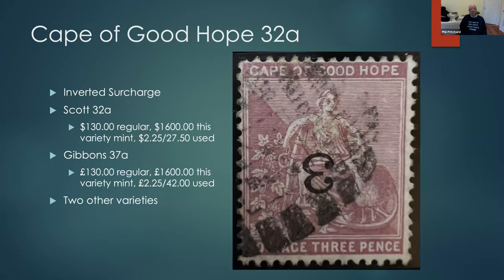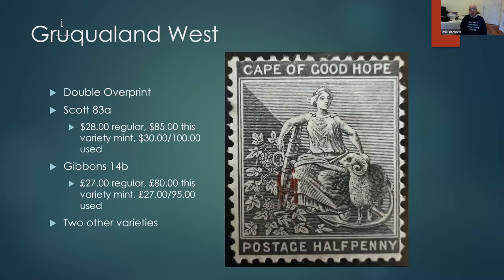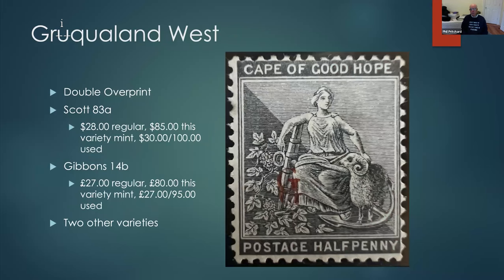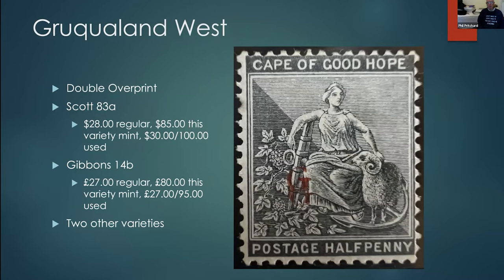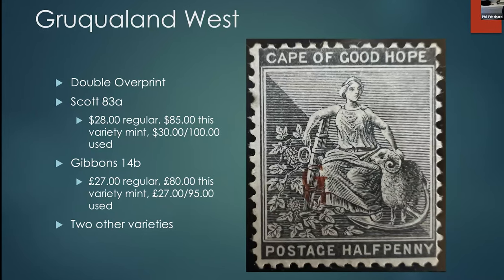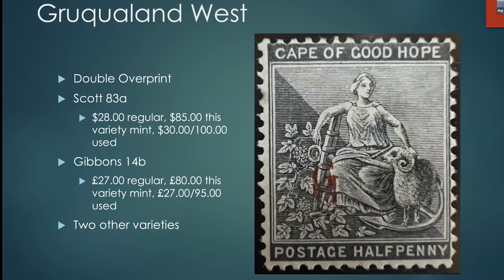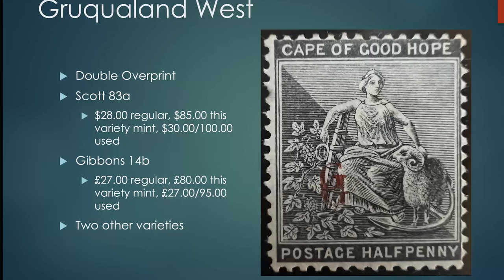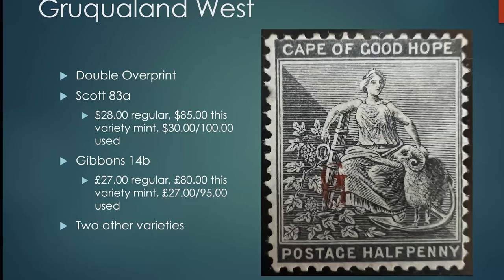Here's Cape of Good Hope — this has an obvious inverted surcharge variety. It's quite expensive mint, not so bad used, and there are two other varieties including a double overprint. Then we have Griqualand West, which is considered a very boring country to collect — it's basically these Cape of Good Hope stamps with the letter 'G' printed on them in various fonts and with various errors. Almost every stamp has three or four different varieties of the overprint: doubled, one inverted, and so on. This is the double overprint.